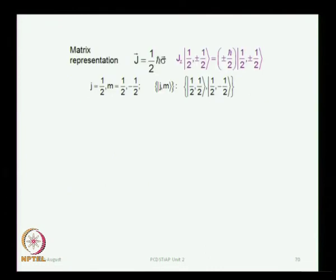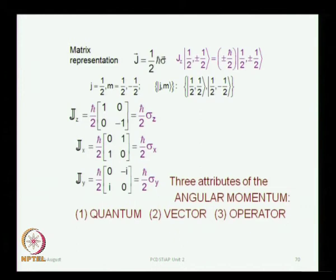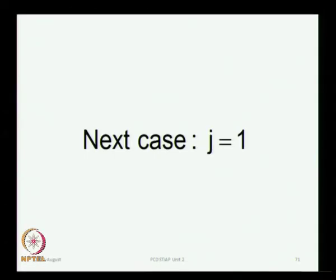These are the Pauli matrices σz, σx, and σy. You must keep track of all the attributes of angular momentum: the quantum nature, the vector nature, the operator nature, and now also the matrix structure. Whenever you deal with these operators — which you will do extensively in Unit 3 — nothing you do can be inconsistent with any one of these features.